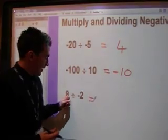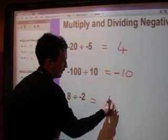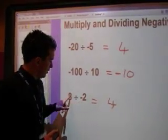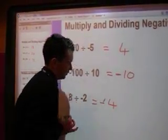Finally. Eight divided by two. So how many twos go into eight? That is four. We've got a positive and a negative. So the answer is negative.